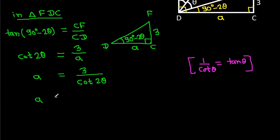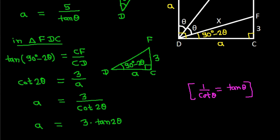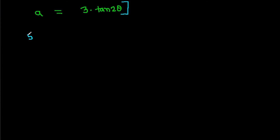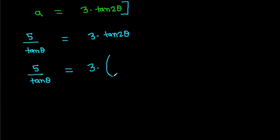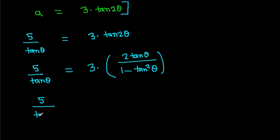So we have A equals 5 over tan theta, and A equals 3 times cot(2 theta), meaning 5 over tan theta equals 3 times cot(2 theta). That means 5 over tan theta equals 3 times the double angle formula: 2 tan theta over (1 minus tan squared theta).